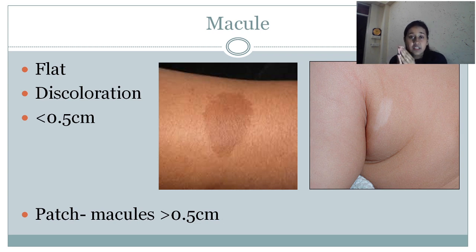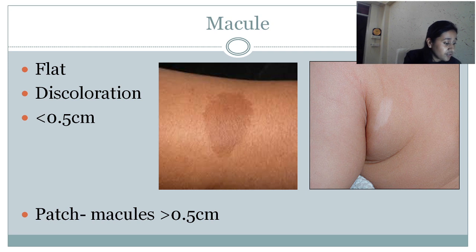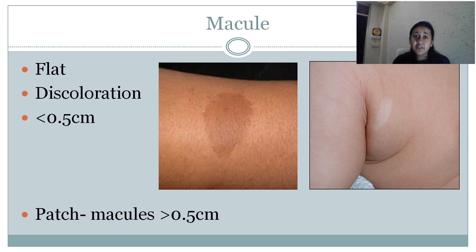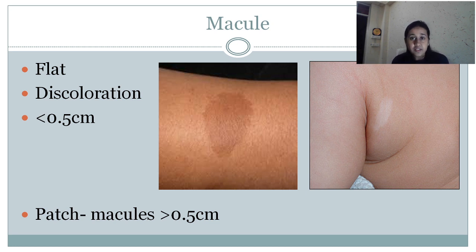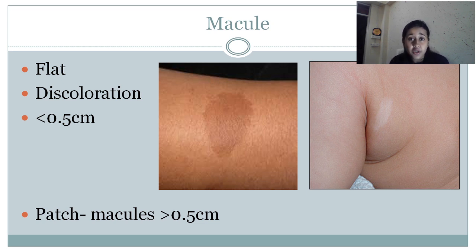First of all, dermatological diseases are divided into two groups: primary lesions and secondary lesions. The primary lesions are macules, papules, pustules, and plaques. The secondary lesions are crusting, erosions, and scaling. In exams, you may get questions asking what are the primary lesions and what are the secondary lesions, so it is very important to know these.